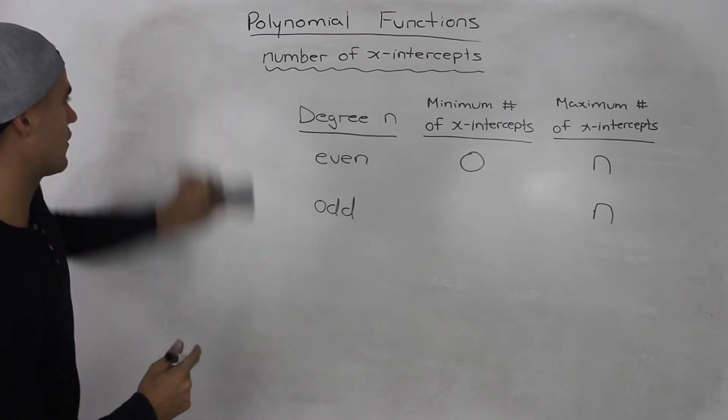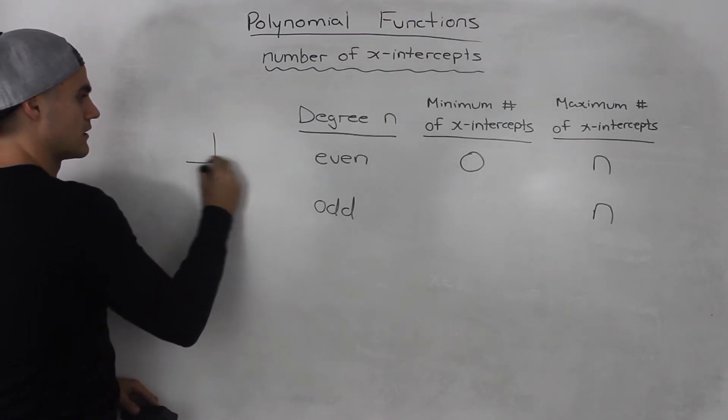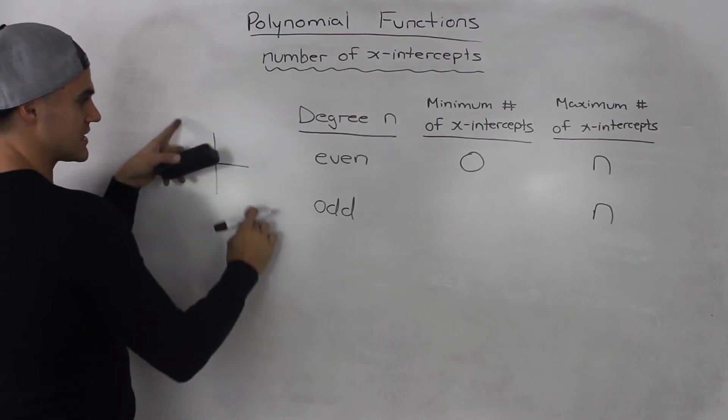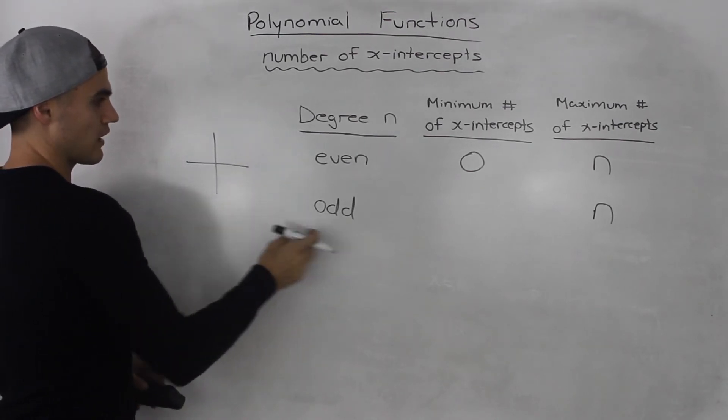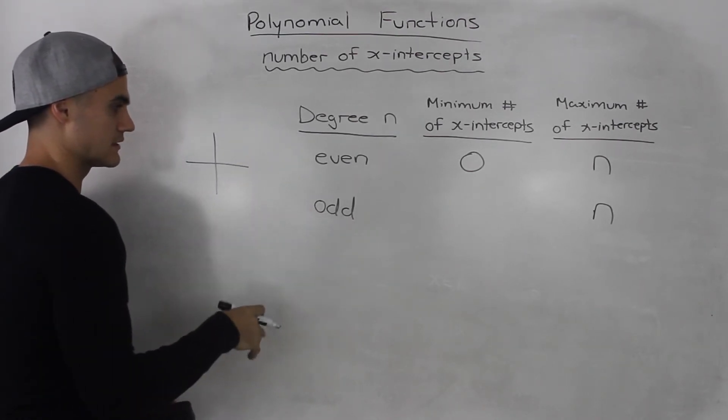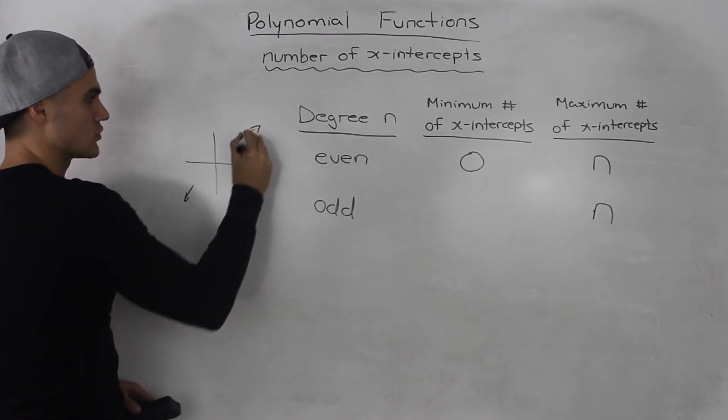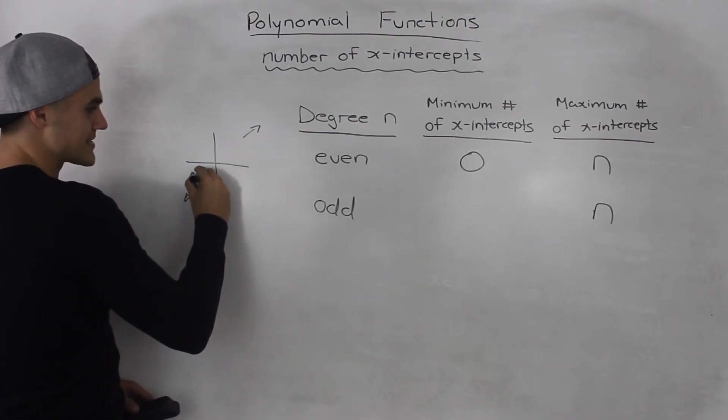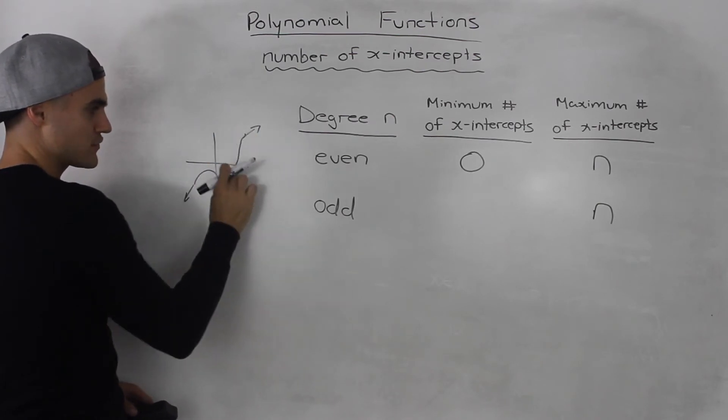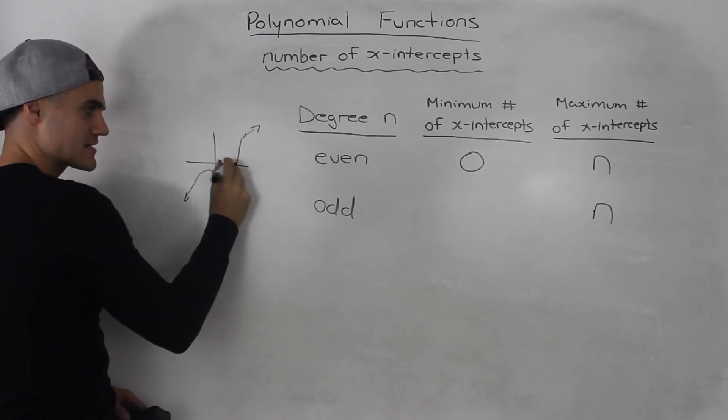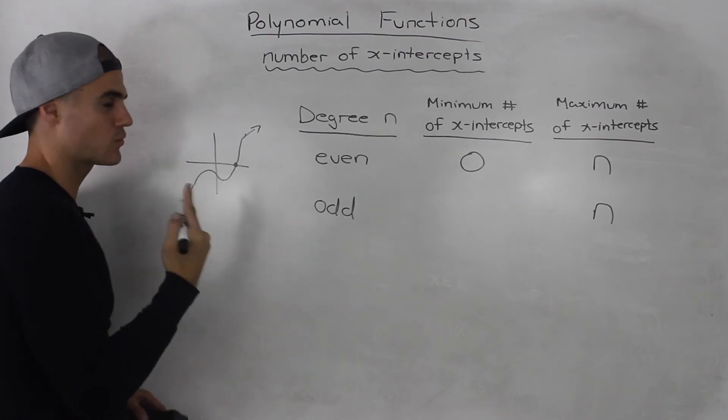Now an odd function, though, because it always has opposite end behavior, if it's odd and has a leading coefficient that's positive, it's going to begin in quadrant 3 and end in quadrant 1. We know that at some point it's going to have to cross the x-axis at least once.